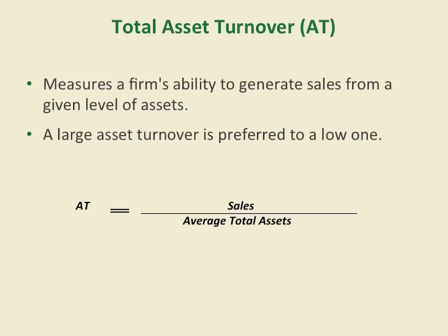The second component of the ROA model is total asset turnover, which equals sales divided by average total assets. This indicates how much sales revenue can be generated from every $1 of average total assets, measuring a firm's efficiency in generating sales from a given level of assets — we want this ratio to be high. In summary, ROA breaks into two parts: profit margin ratio and total asset turnover. As a manager, to improve ROA, you should improve both your profit margin and your total asset turnover.